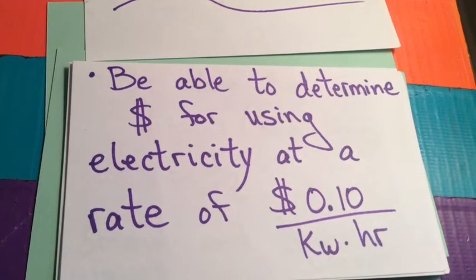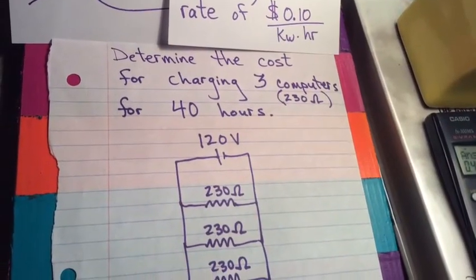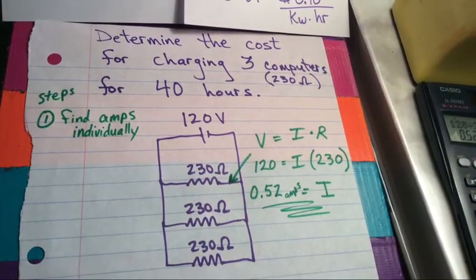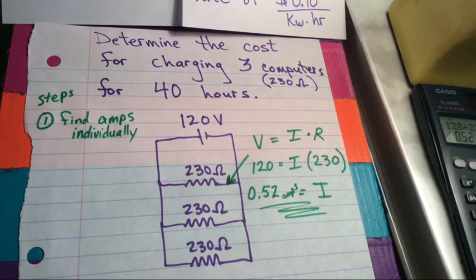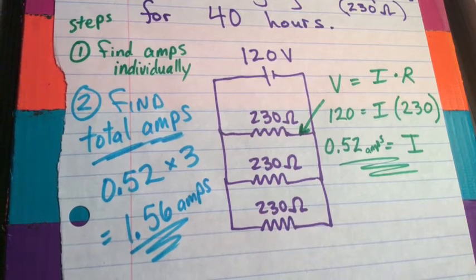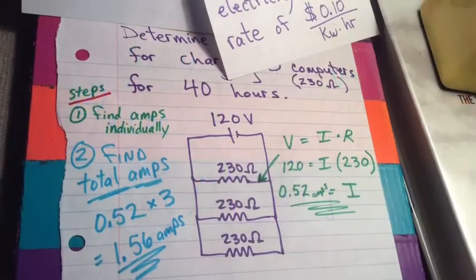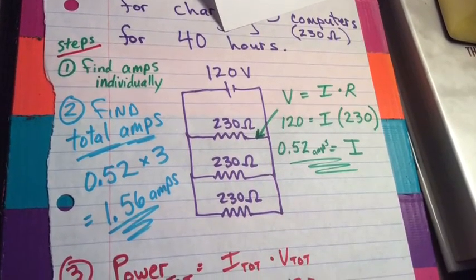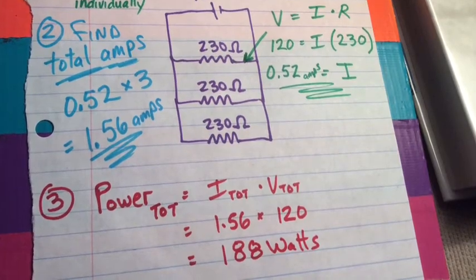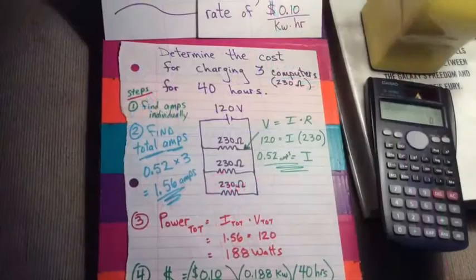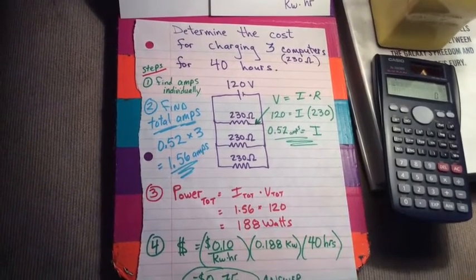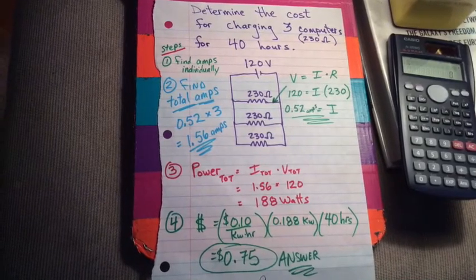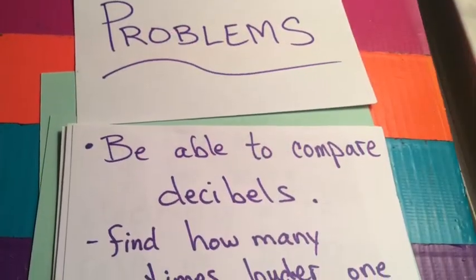How much does it cost? Let's plug three things in. Each one is 230 ohms. Let's run them for 40 hours. That's not going to cost very much. All right. That is, it's relatively high resistance. You get about half an amp on each branch. About 1.5 amps total. Once you got total amps, you can find total power. I get 188 watts. That's less than a kilowatt. Not much. It's a fraction of a kilowatt times my 40 hours times my 10 cents per kilowatt hour. What's that? 75 cents. Not much. Not much at all.